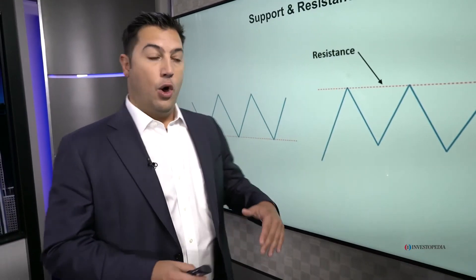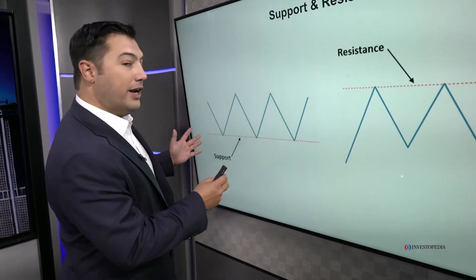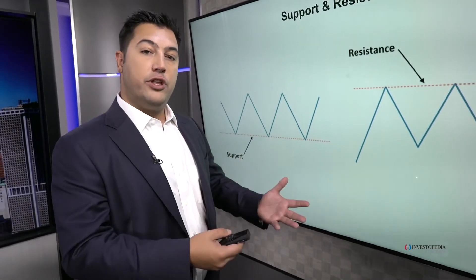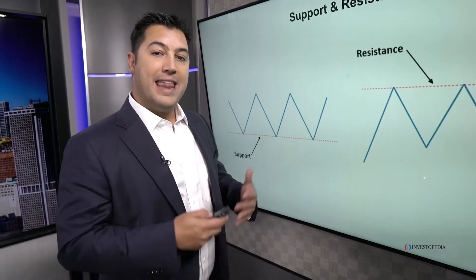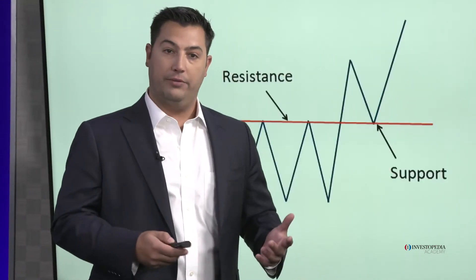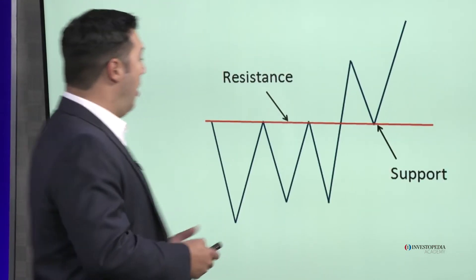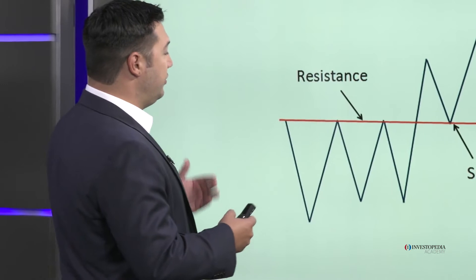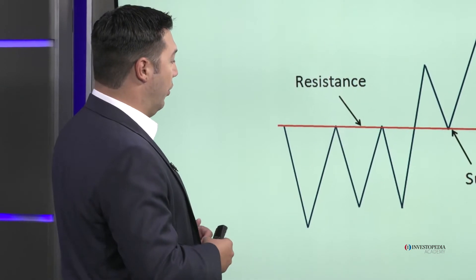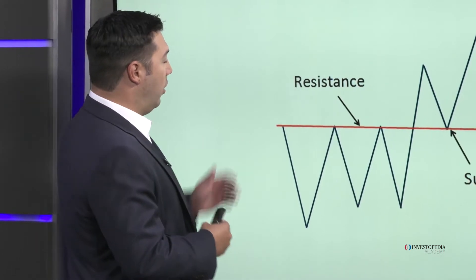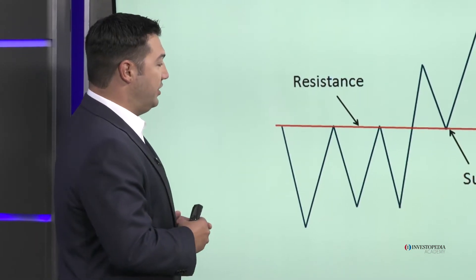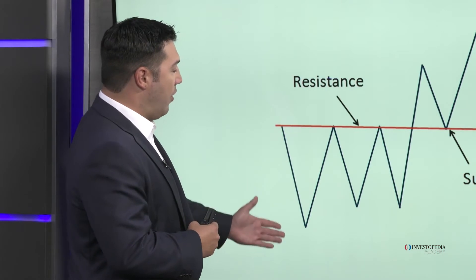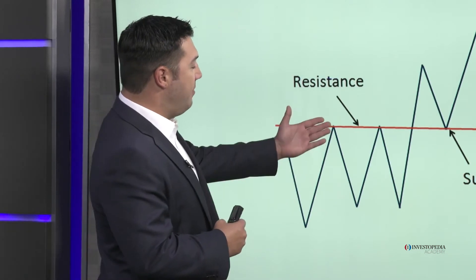What we want to focus on is that once one is complete, it turns into the other one — and that's what we call polarity. Polarity is when resistance turns into support. Let's start with resistance: we're looking at a stock where every time it runs into this level, it sells off.